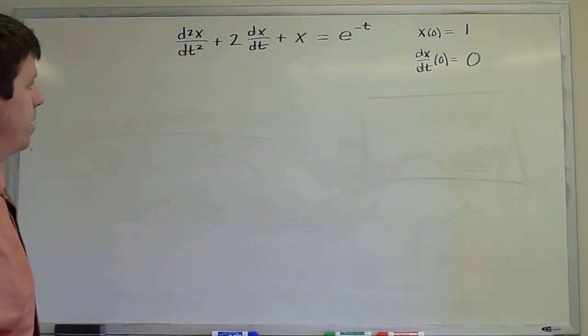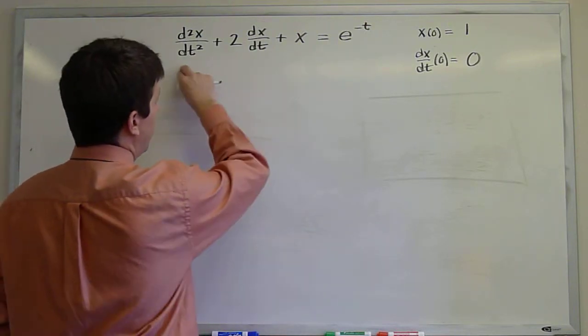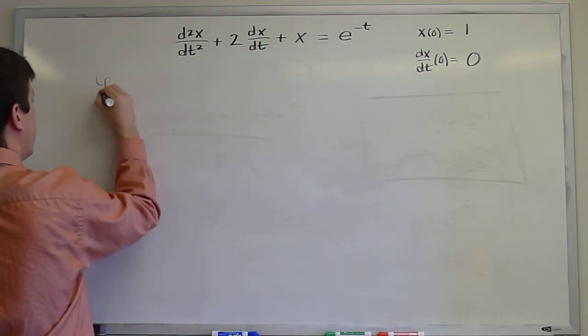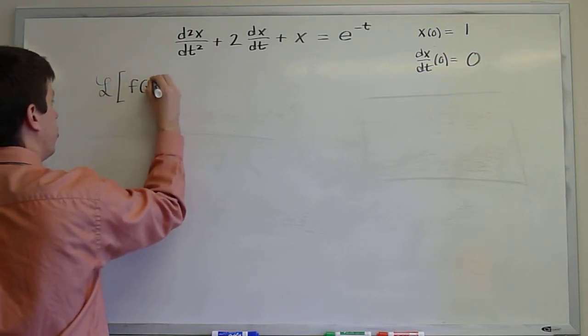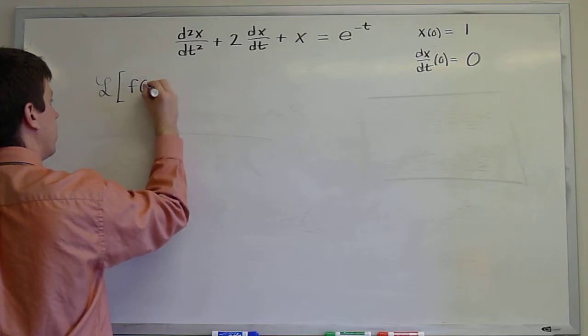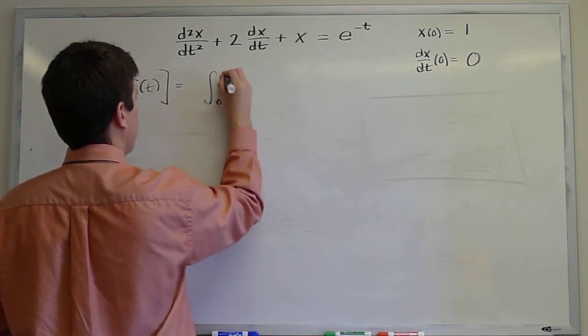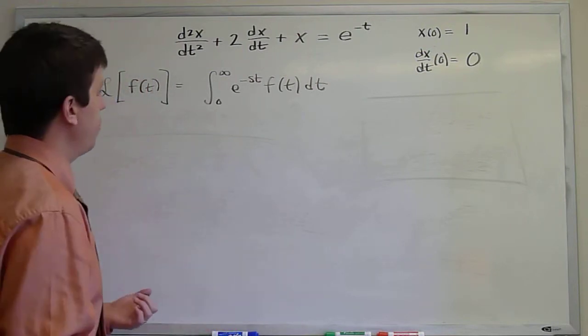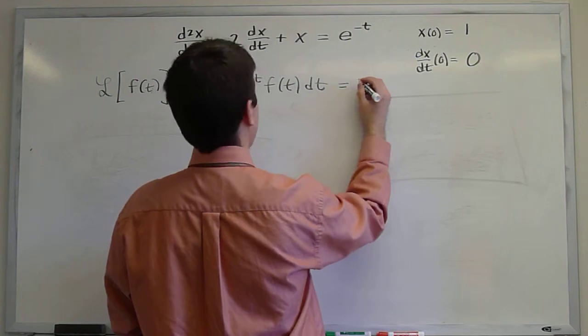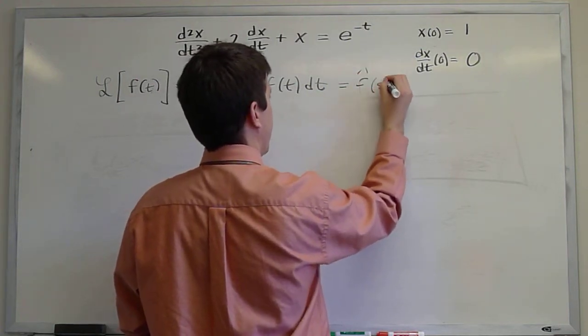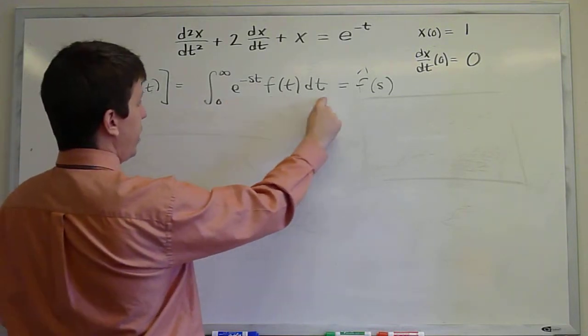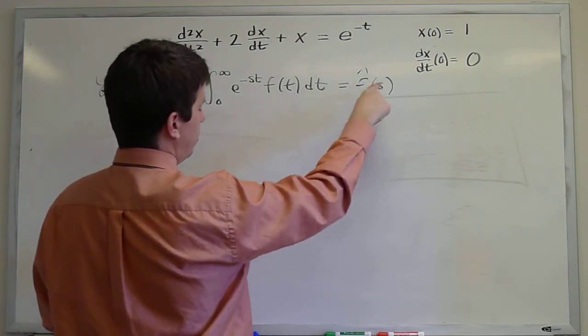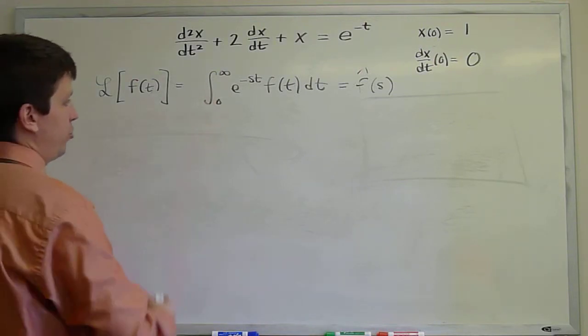We first, to employ the method of Laplace transforms, need to recall what the Laplace transform does to each one of these terms. We are going to take the Laplace transform of both sides, and as a reminder, the Laplace transform of a function f is the integral from 0 to infinity e to the minus st f dt, and we introduce some notation to indicate the Laplace transform by indicating f hat. So this integral integrates over t, it leaves behind s as a parametric dependency of this integral, and so the resulting function f hat is a function of s, and this is how we would denote Laplace transforms of functions.